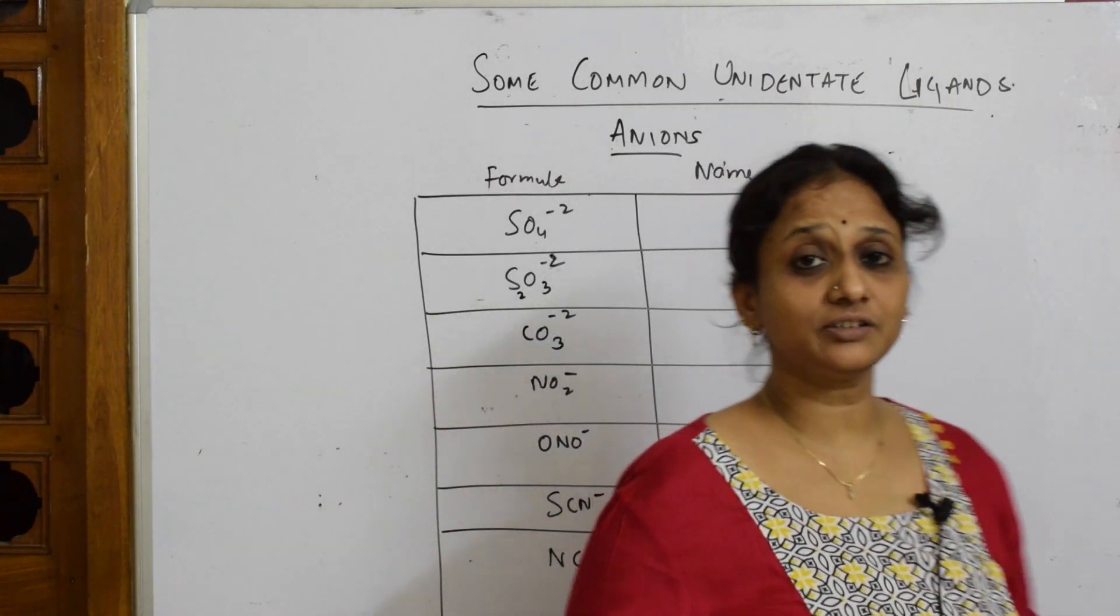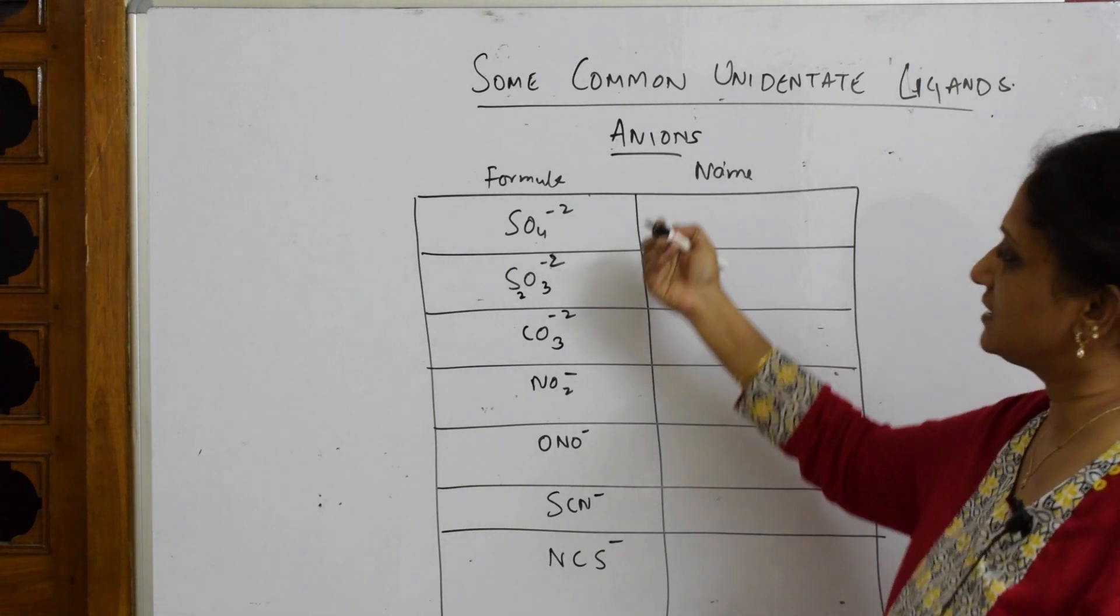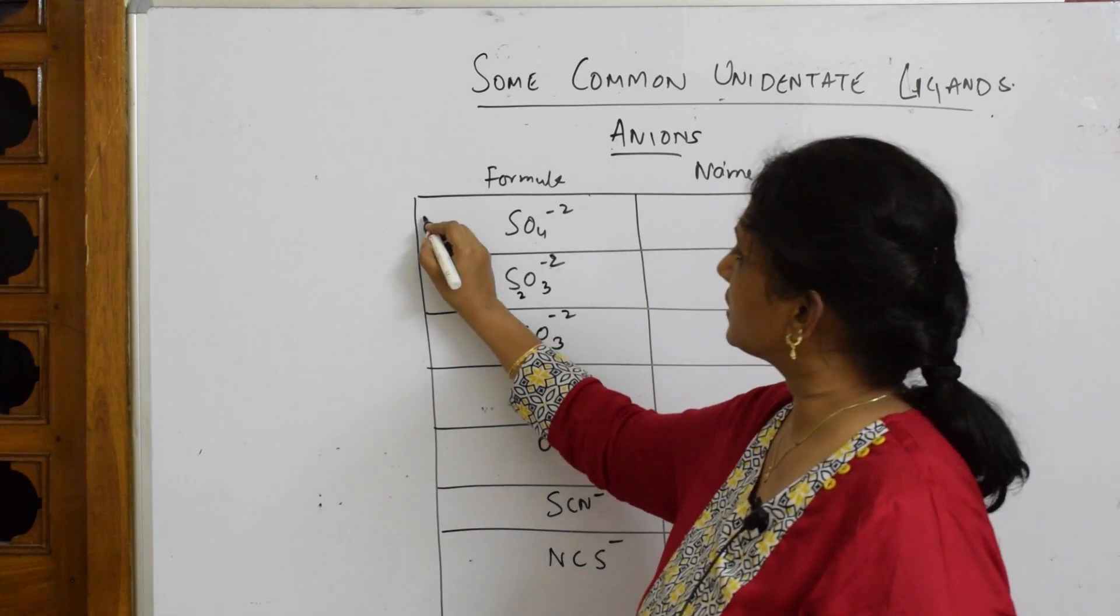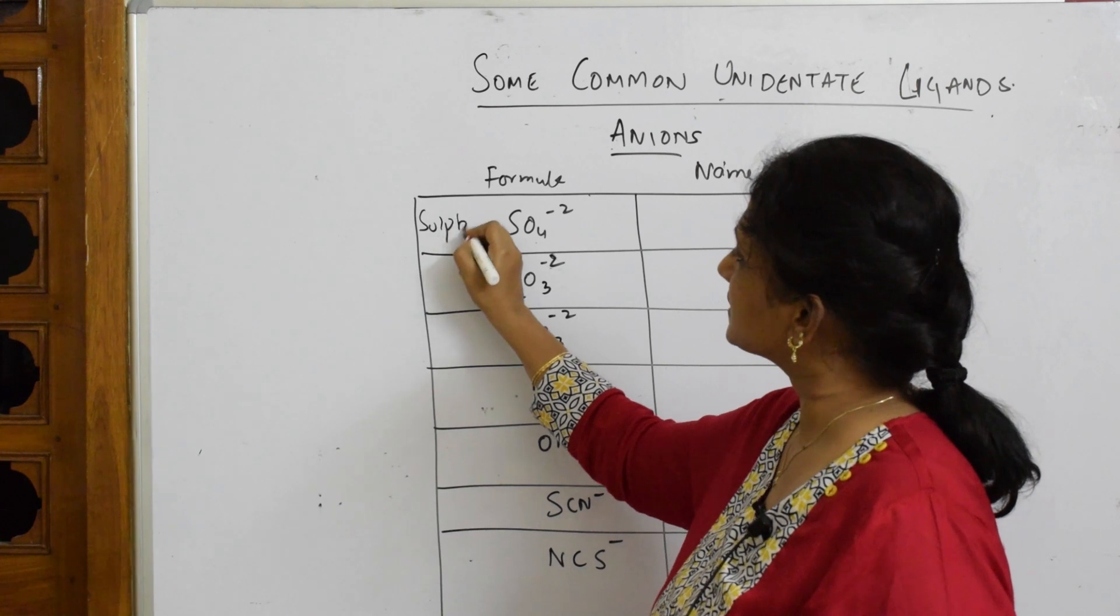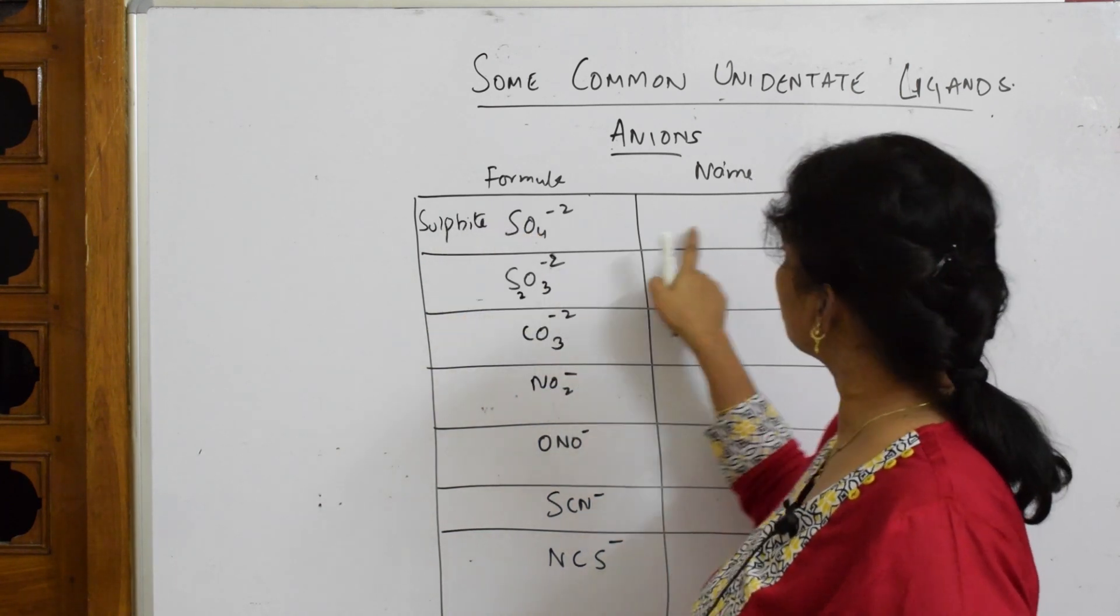Now let us learn about anionic ligands and how to name them. Here again, the same thing - suppose this is sulfite (S-U-L-P-H-I-T-E). This 'e' is replaced by 'o'.